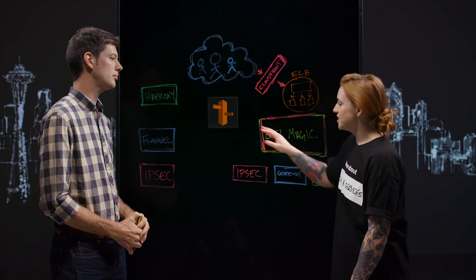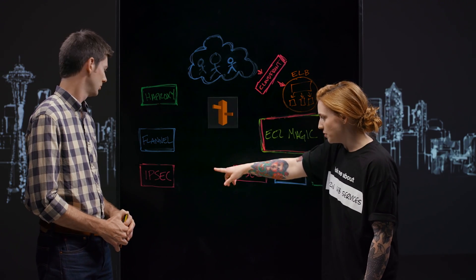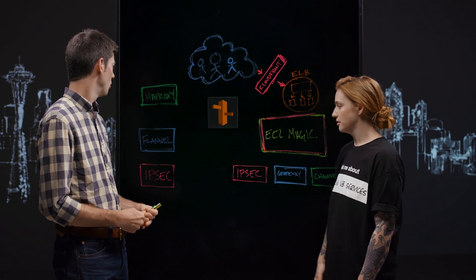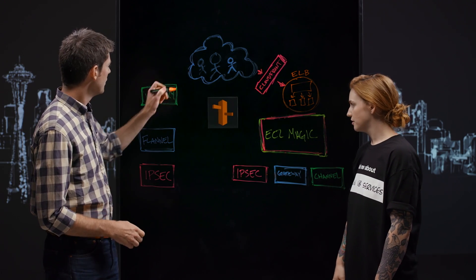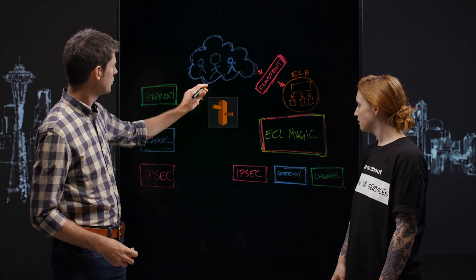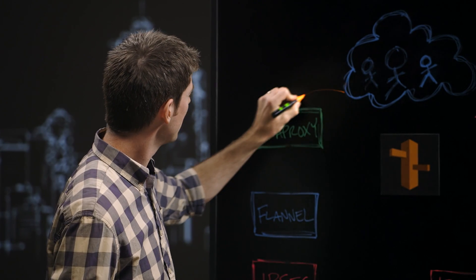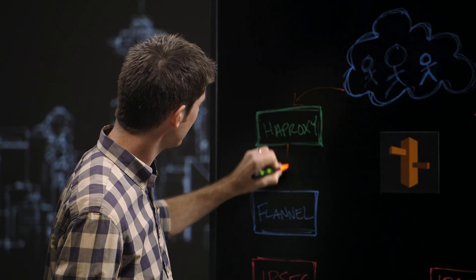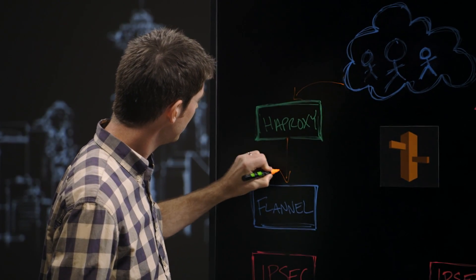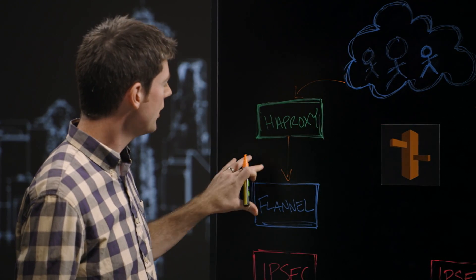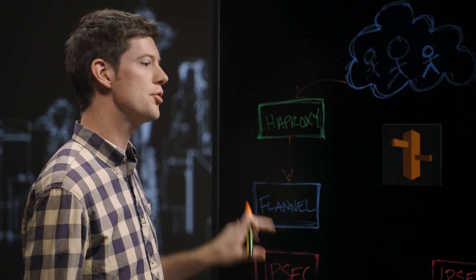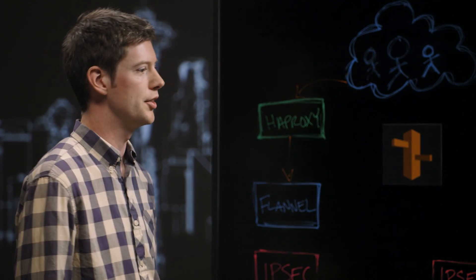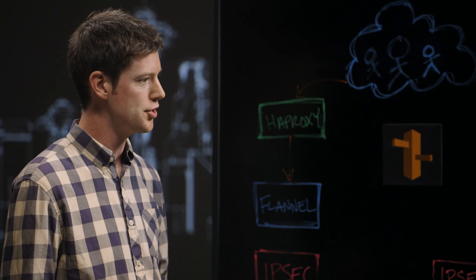So once I hit the Flannel service, it looks like I hit IPsec next. What happens next? When you connect to Slack's WebSocket, you connect to HAProxy, which connects to Flannel. As I mentioned, that is trying to route users on the same team to the same Flannel instance, and that's for cache efficiency.